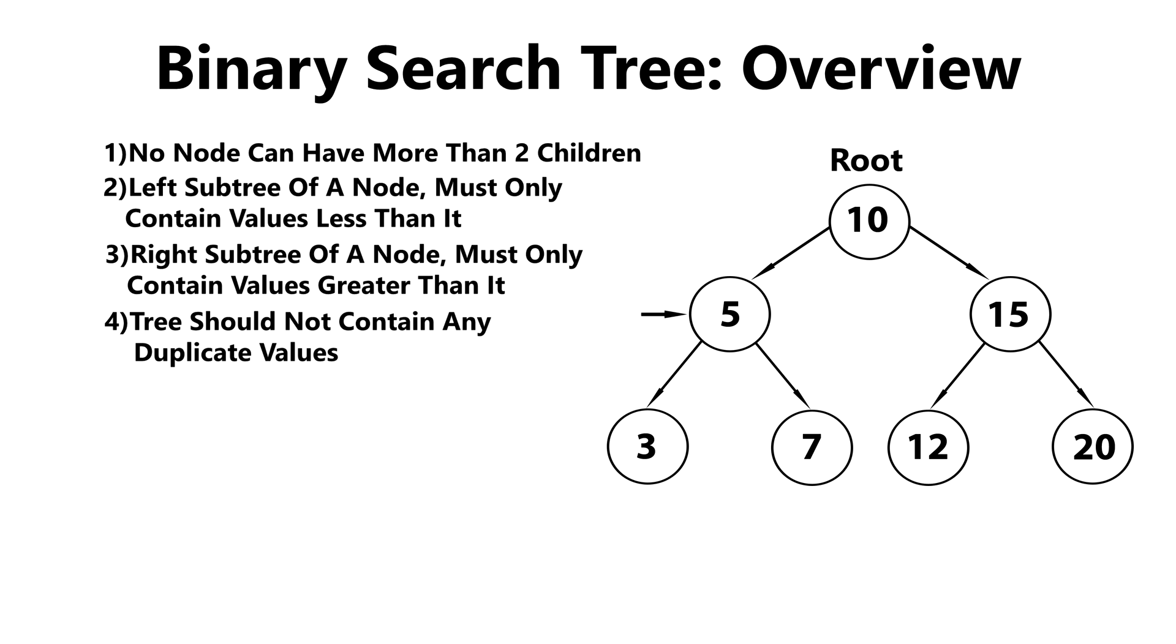And if you look down here, you can see that the same applies. Three is less than five, so it's the left child. Seven is greater than five, so it's the right child. These properties persist throughout our entire tree, which is why it's a binary search tree. That pretty much wraps it up for this tutorial. In the upcoming tutorials, we're going to start implementing our own binary search tree.